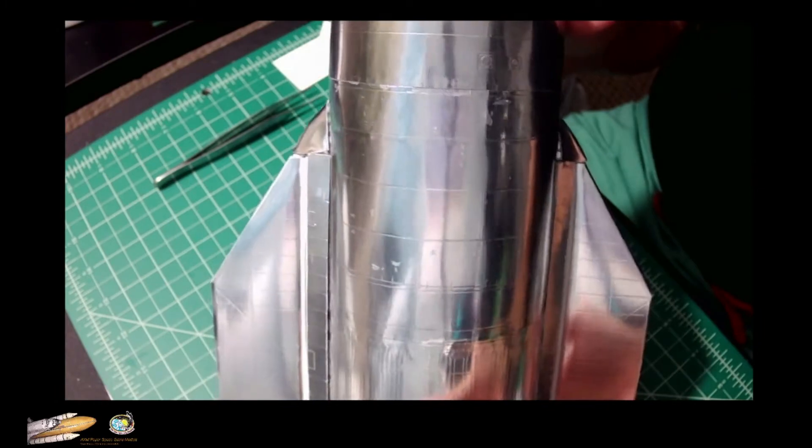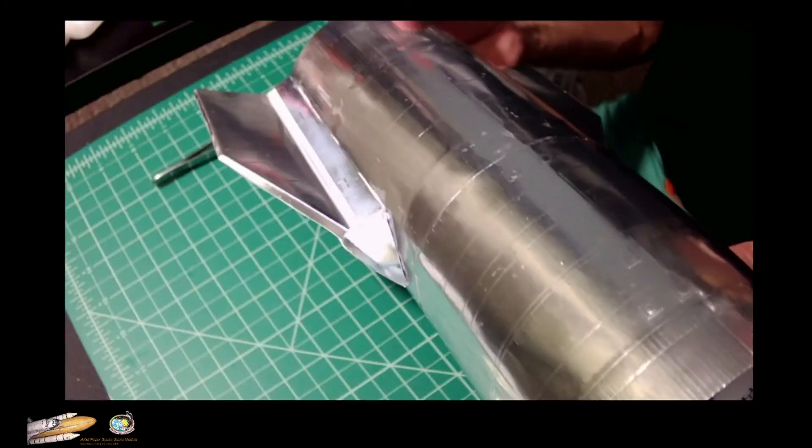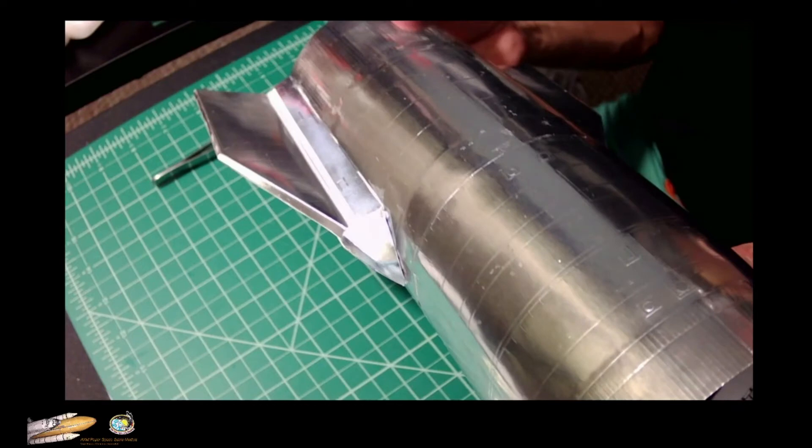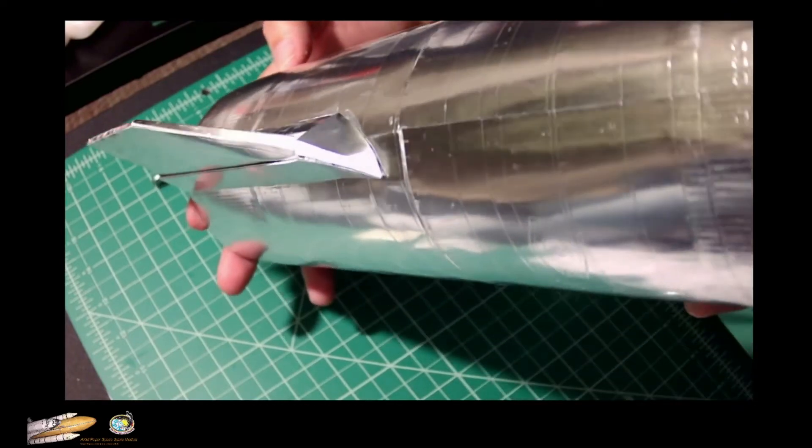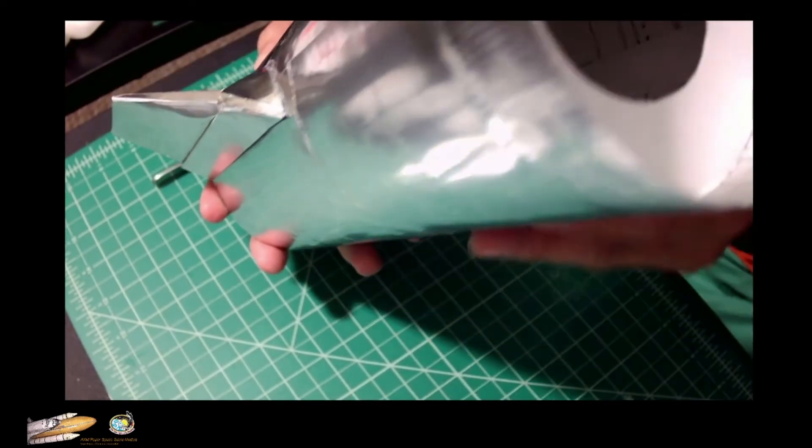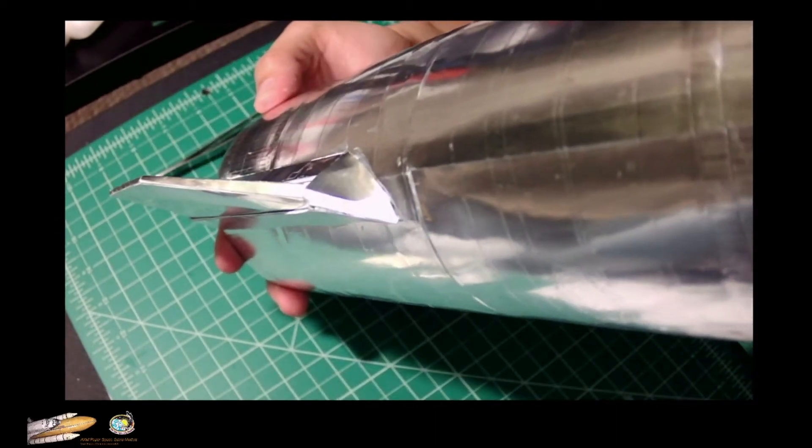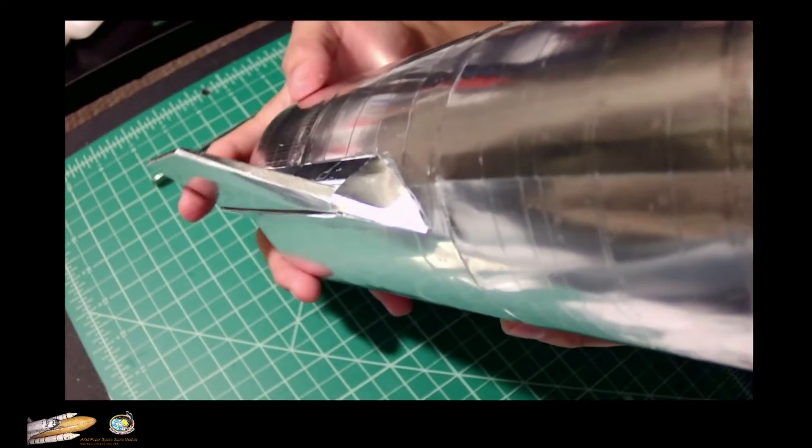Then after this we'll move on with the canards. This is how it will look like from the top. This is the belly side, and the hinge works, comes this way like that.